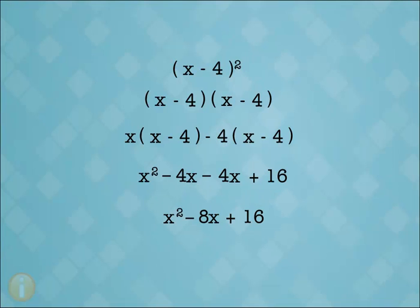When we square a binomial with a leading coefficient of 1, the result is always in this form. The first term is the square of the first term in the original binomial. The last term is the square of the last term in the original binomial.